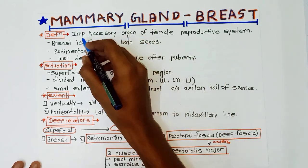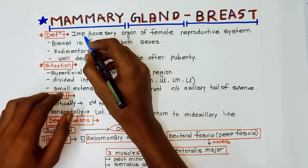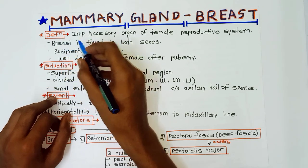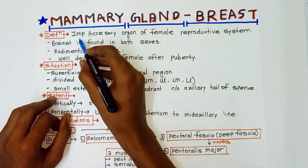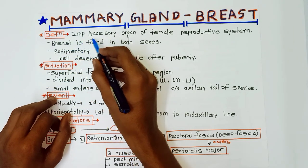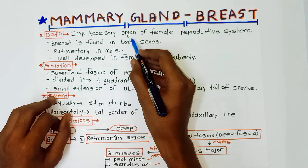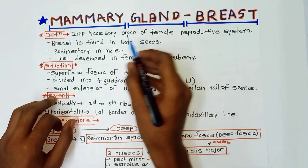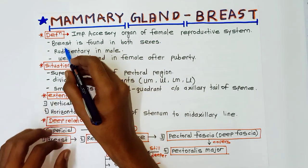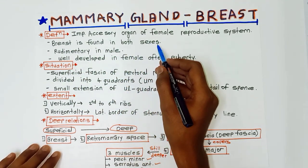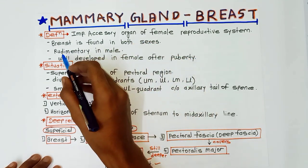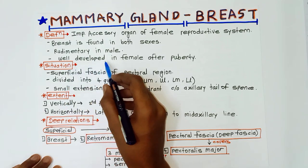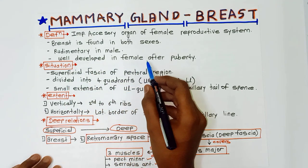Let's start. First of all, definition: the breast is an important accessory organ of the female reproductive system. Breast is found in both sexes — it is rudimentary in males and well developed in females after puberty. In the introduction, we should write these four points.